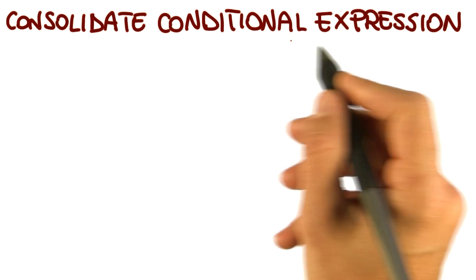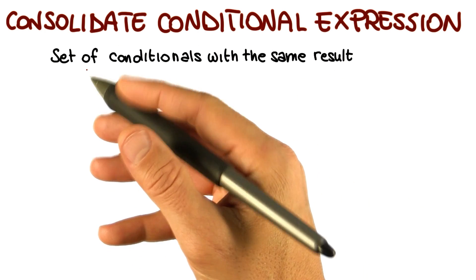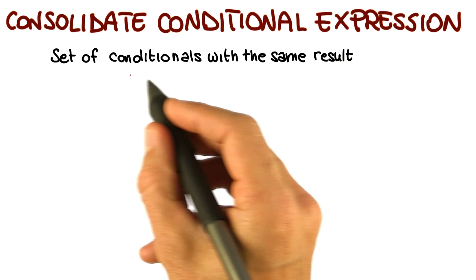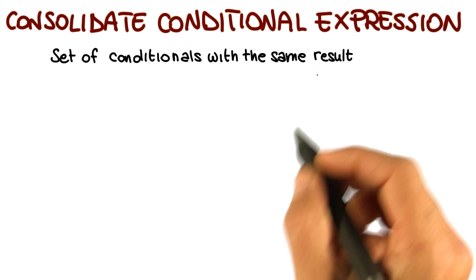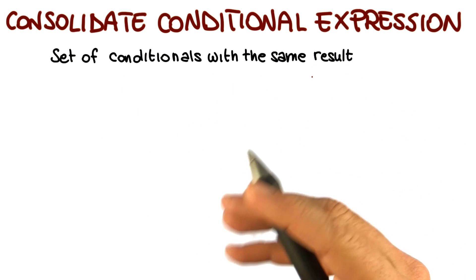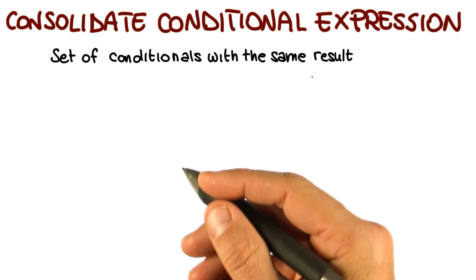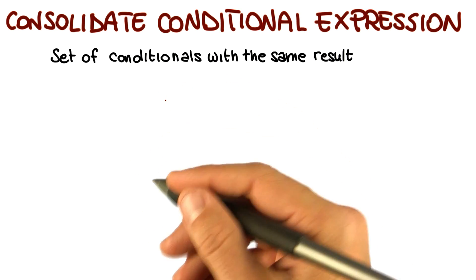We're now going to talk about the consolidate conditional expression refactoring. A common situation in code is that you have a set of conditionals with the same result. What that means is that sometimes the code contains a series of conditional checks in which each check is different, yet the result in action is the same.